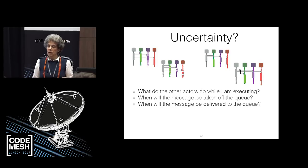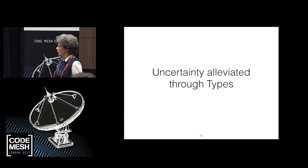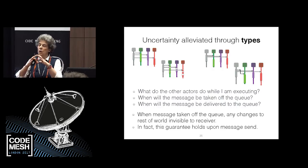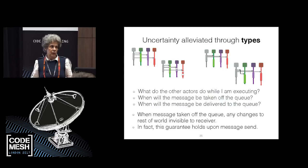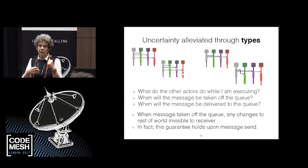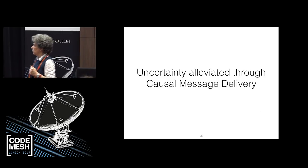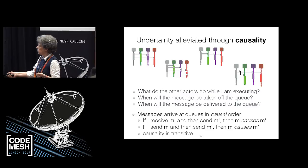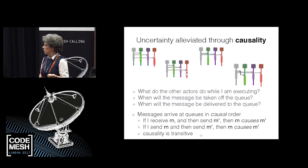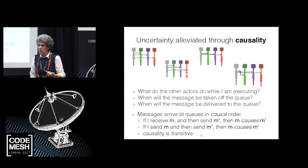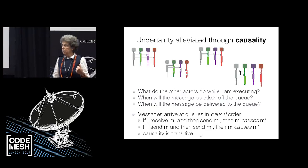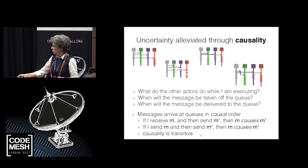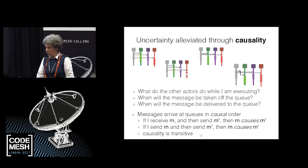There are two ways we alleviate the uncertainty. One is through types: the type system says behaviors are atomic — when you take a message off the queue, it is as if you have unique access to all the state, and any modifications are happening atomically. The other way is through causal message delivery. Messages arrive in causal order: if I receive a message and then send another, the first causes the second; if I send one message then another, the first causes the other; and causality is transitive.